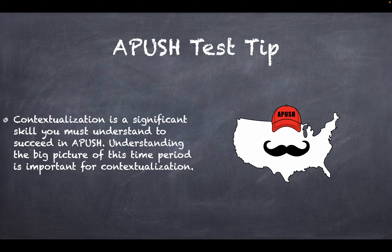Each video will have an important test tip. This one is about contextualization — it is a significant skill you must understand to succeed in AP US History. Understanding the big picture of a time period is important for contextualization. It's going to help you with your essays, it's a requirement, and it really helps you understand the big picture.